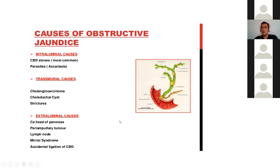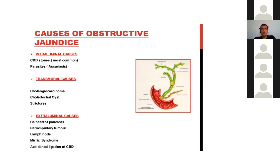Transmural causes involve the wall itself — like cholangiocarcinoma or any stricture. Strictures can be benign or malignant. Benign strictures usually form about one and a half to two years after any biliary surgery. When taking a history in obstructive jaundice, it is important to ask about any previous surgery on the gallbladder, like a laparoscopic cholecystectomy, as the patient can develop a transmural stricture two years after.